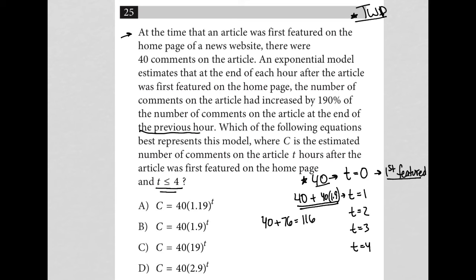Let's see which one of these answer choices gives me 116 when T is one. That's what I'm looking for. Here when T is one, I'd have 1.9 to the first power, which is just 1.9. 40 times 1.19 is not equal to 116, so A is gone.